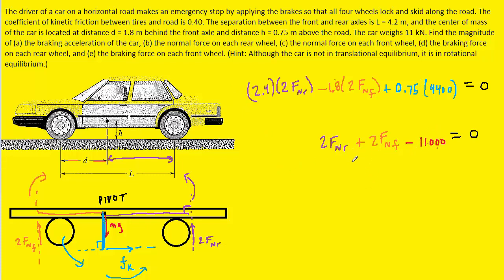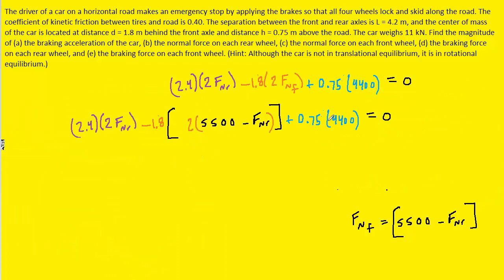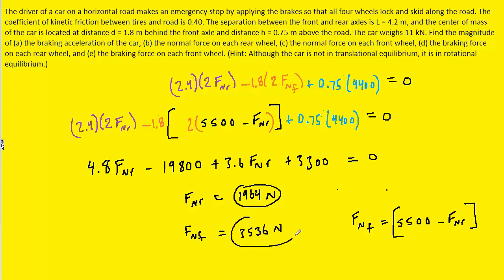Taking the second equation, we solve for Fnf: add 11,000 to the other side, divide by 2, then subtract Fnr. Substituting this expression for Fnf into the first torque equation and simplifying — multiplying terms, distributing, and combining like terms — we solve for Fnr to get approximately 1,964 N (the answer to part B). Substituting Fnr back gives Fnf approximately 3,536 N, which is the correct answer to part C.